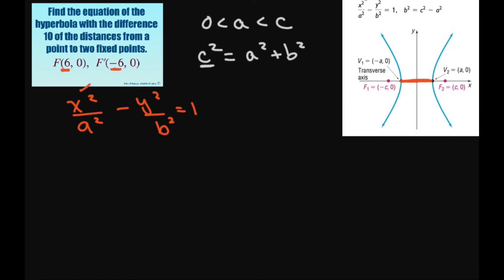So since the length of the transverse axis is 10, this length is 10. 2a equals 10. That means you have your 2a equals 10, just like with an ellipse. So your a is 5.